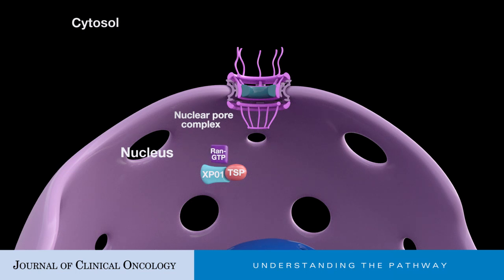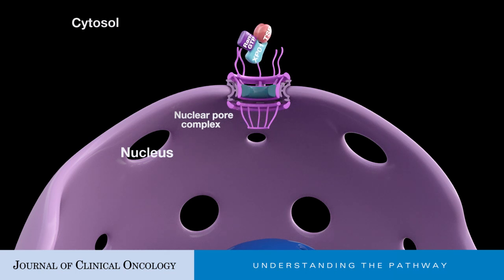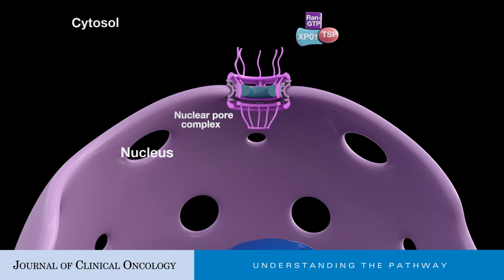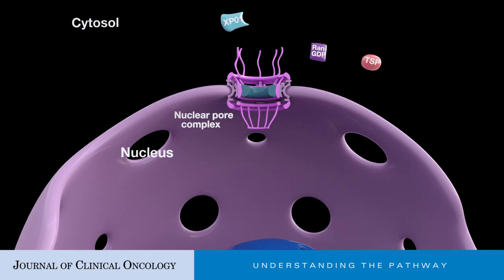Nuclear export of proteins occurs first through the binding of RAN-GTP, a GTPase protein, to XPO1. Such binding causes structural alteration in XPO1, thereby increasing its affinity toward the protein to be exported. Once the cargo protein is bound, the RAN-exportin-cargo complex moves out of the nucleus through the nuclear pore in a process controlled by the guanosine triphosphate (GTP) / guanosine diphosphate (GDP) concentration gradient. Once in the cytosol, GTPase activating proteins (GAPs) hydrolyze RAN-GTP to RAN-GDP, causing structural alteration and subsequent XPO1 release.